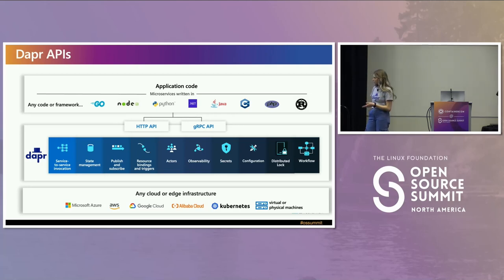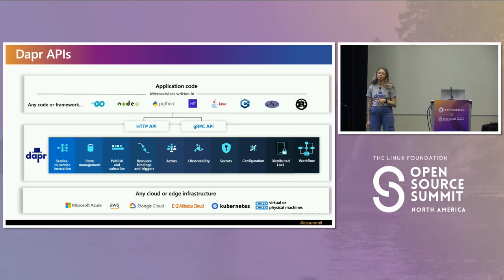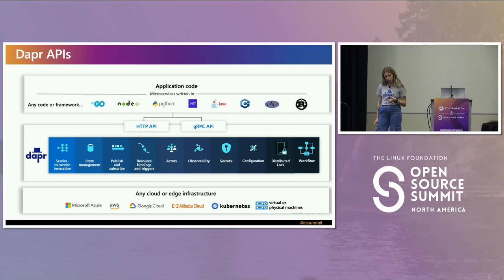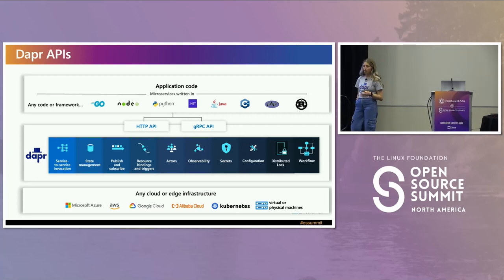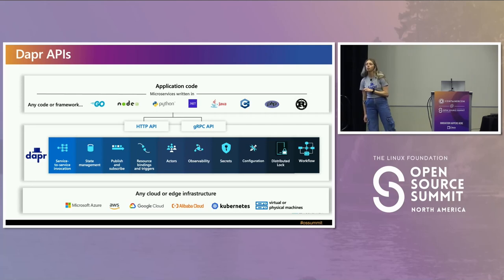Here's a list of the building blocks we have, and these applications can be deployed on any cloud or edge infrastructure. Typically in production, DAPR is deployed on Kubernetes. However, you can compile DAPR without a container dependency to deploy it on virtual machines.